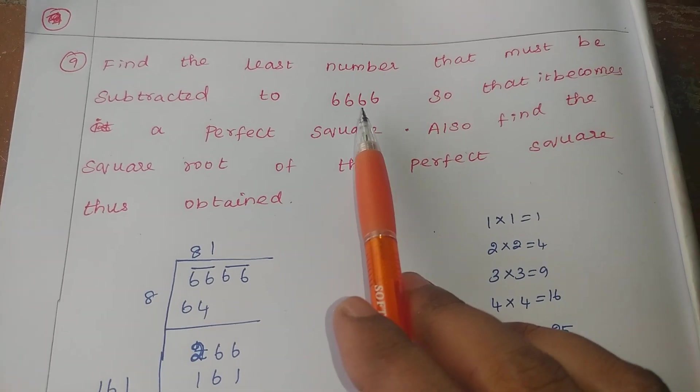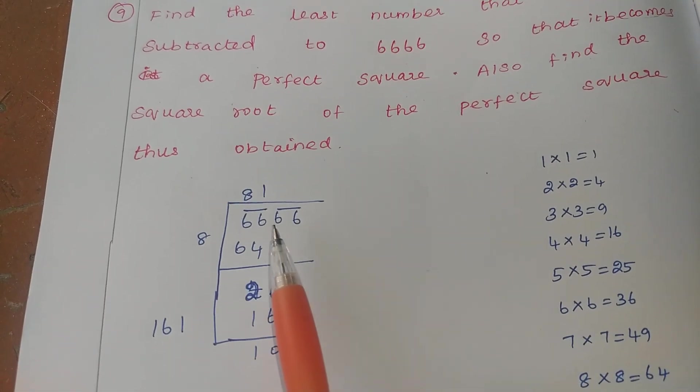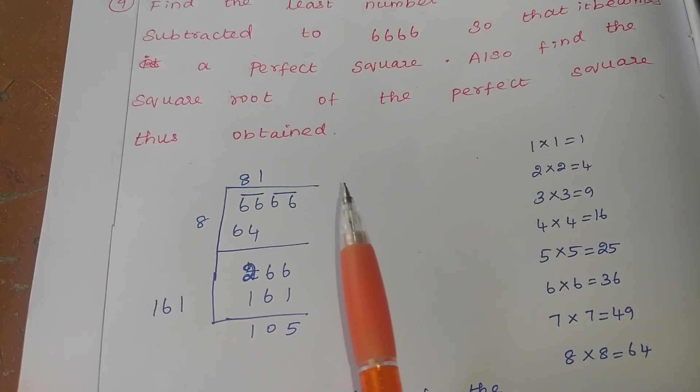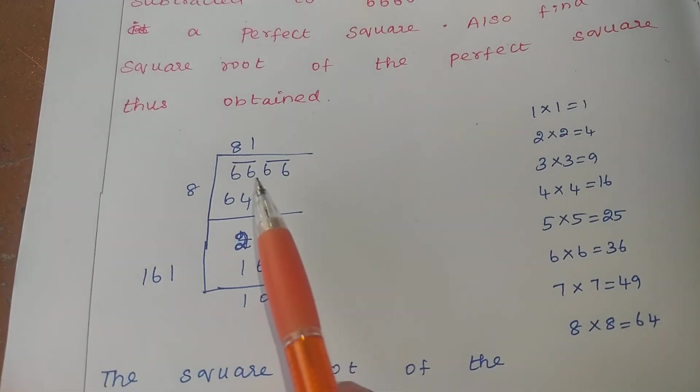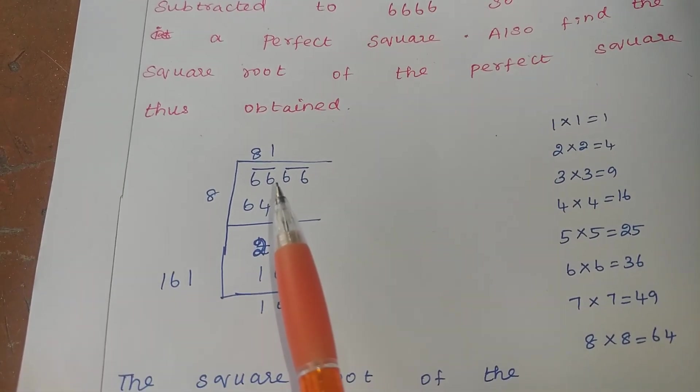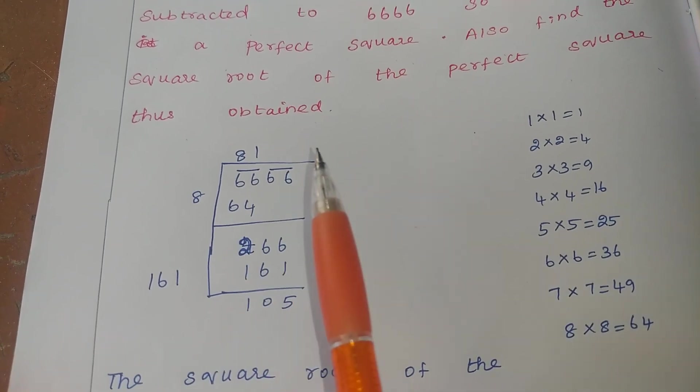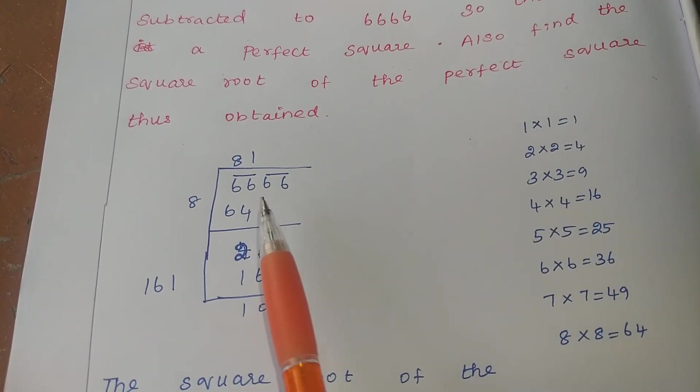Sum 6666. Now this one we are going to do in long division. So long division means first step what you want to do? You want to see whether the number is odd or even. How do you see odd or even? By counting the digits. 1, 2, 3, 4.